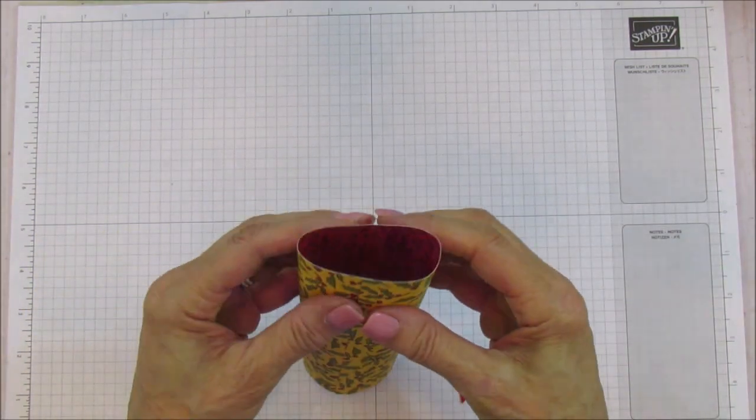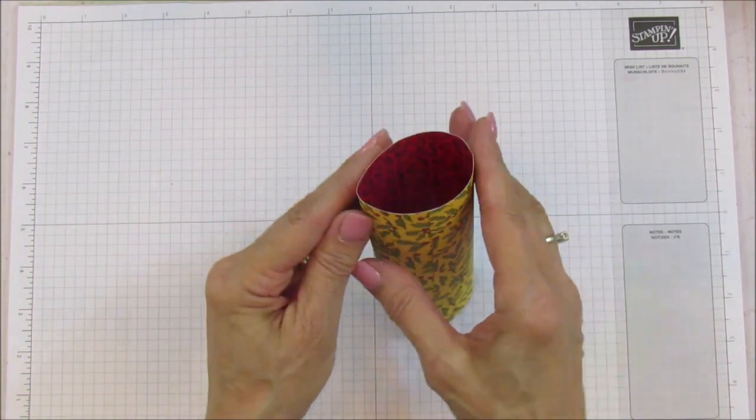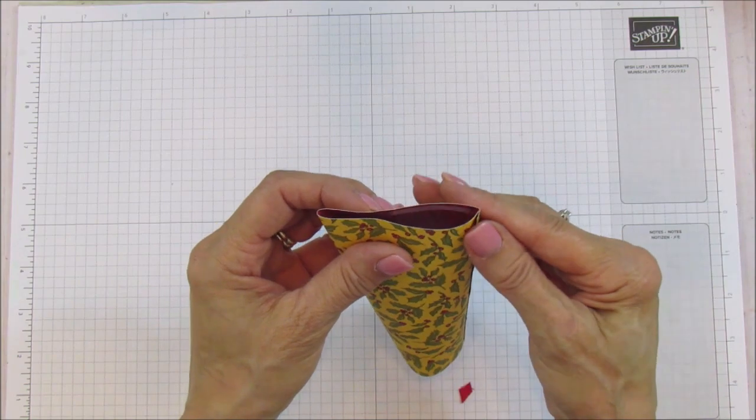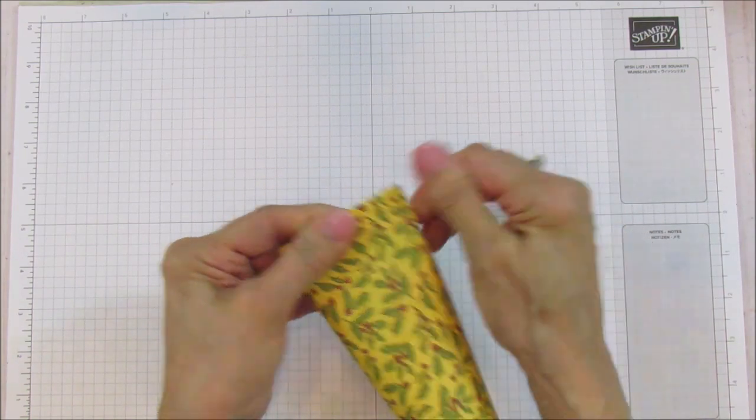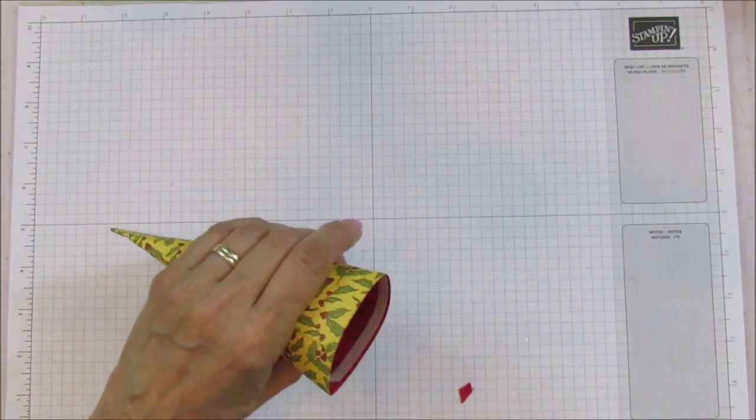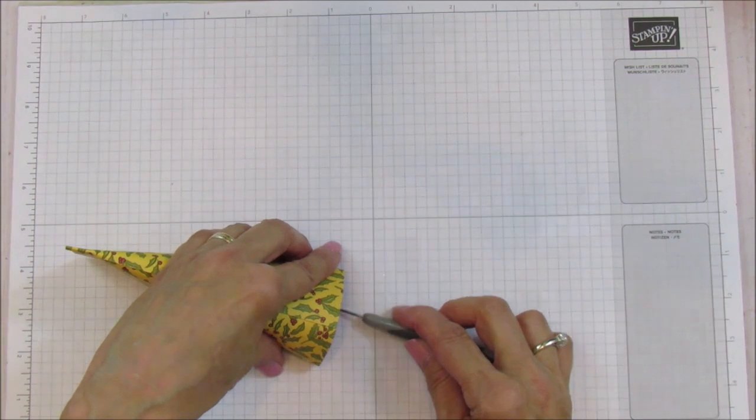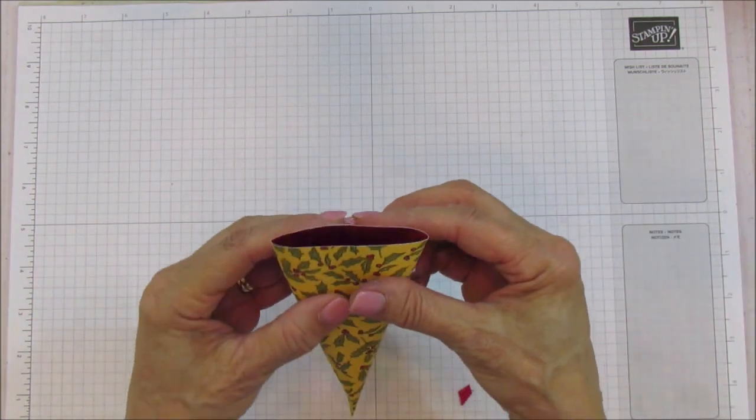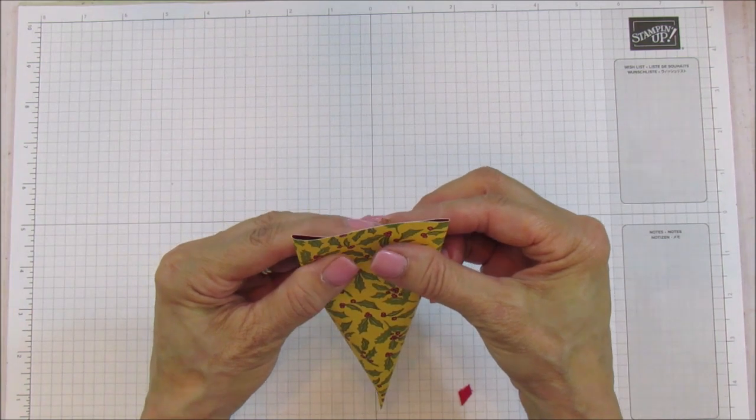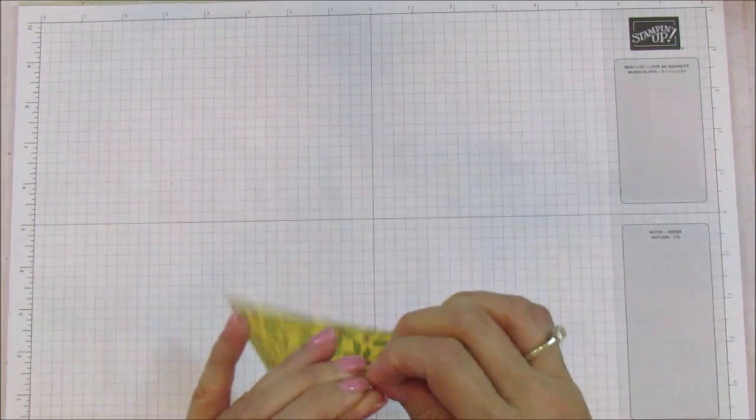And this one we are going to close this way, and then this one we're going to take off. Don't forget to fill it before you close it up - so fill it up with your candy. And then this one we're pressing the opposite way. Now I did something a little bit different with that one.